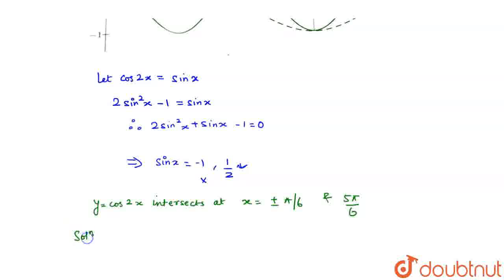The solution set would be x belonging to minus pi by 6 to pi by 6 union 5 pi by 6 to pi. I hope you understood the explanation. Thank you.